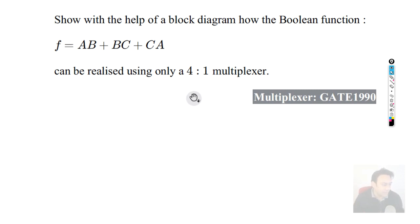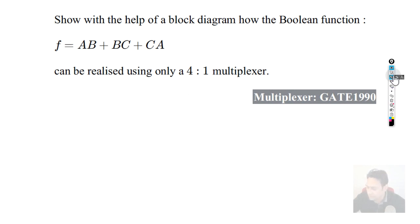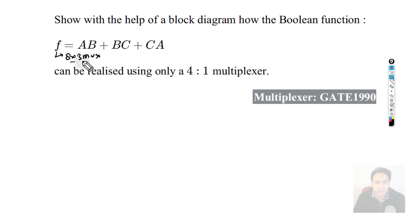Second question: show with a block diagram how the boolean function AB + BC + CA can be realized using a 4x1 multiplexer. This function has three variables, so normally you'd need an 8x1 multiplexer, but we can also realize it using a 4x1 multiplexer by using variable entrant mapping.